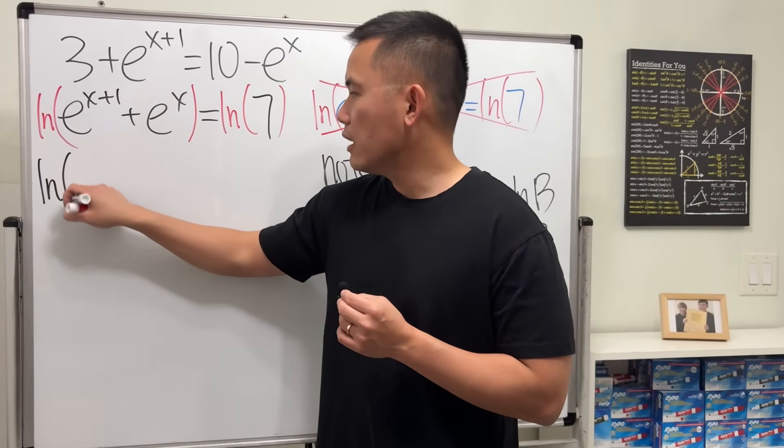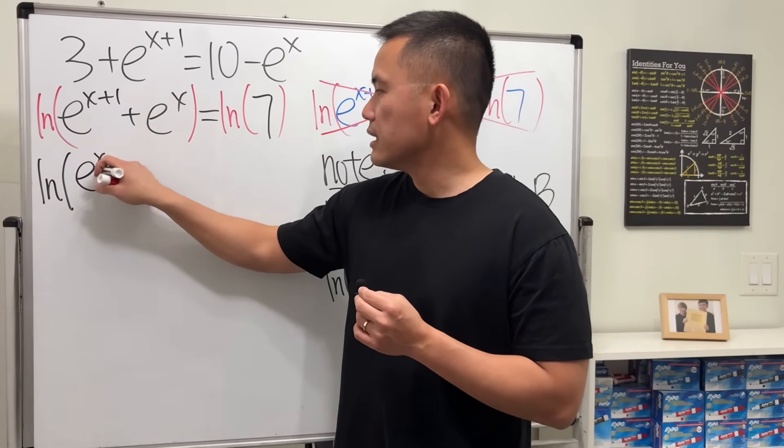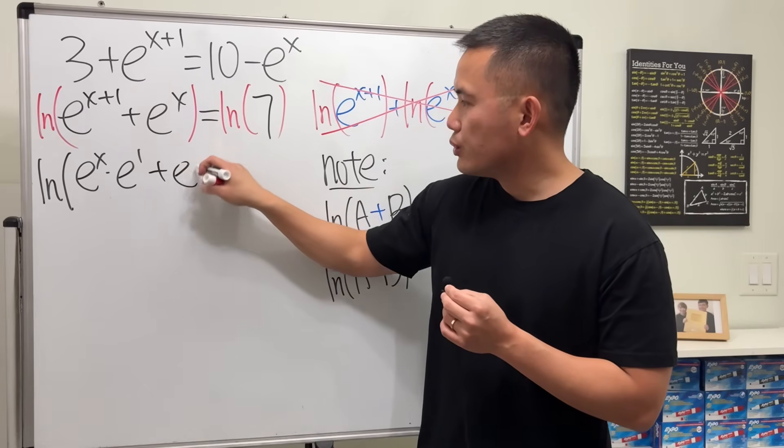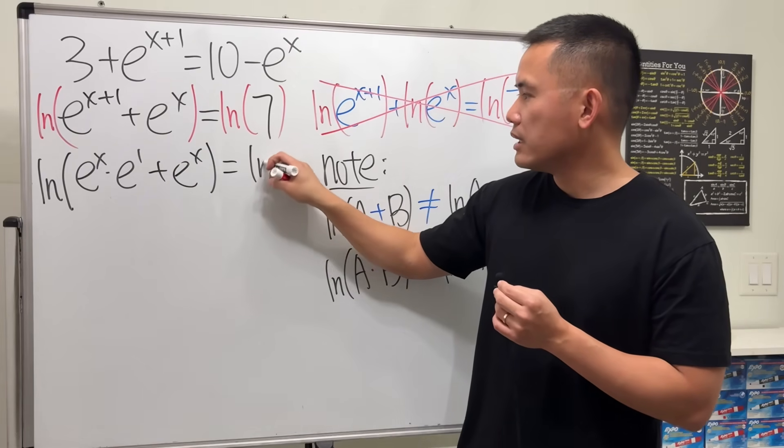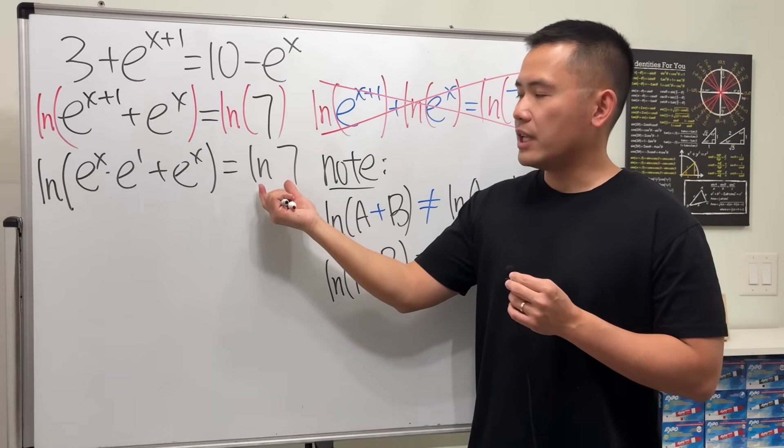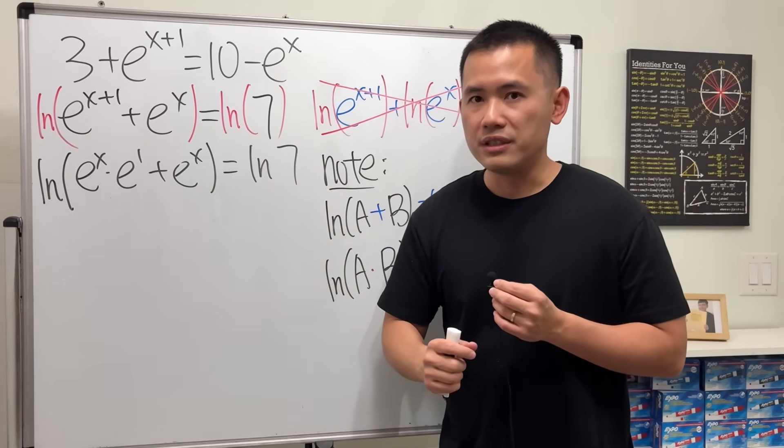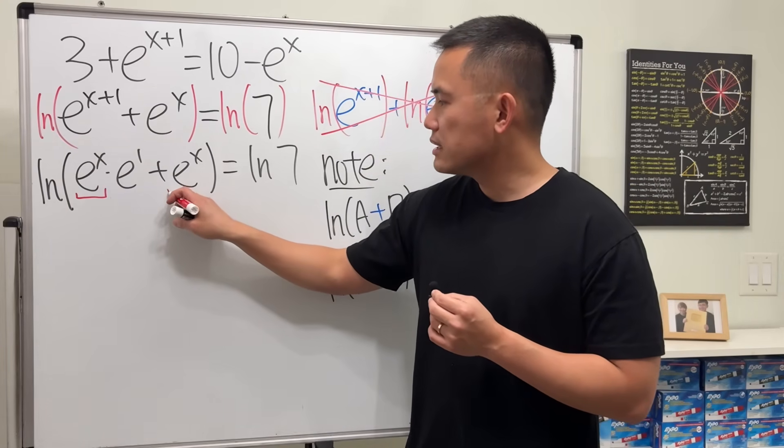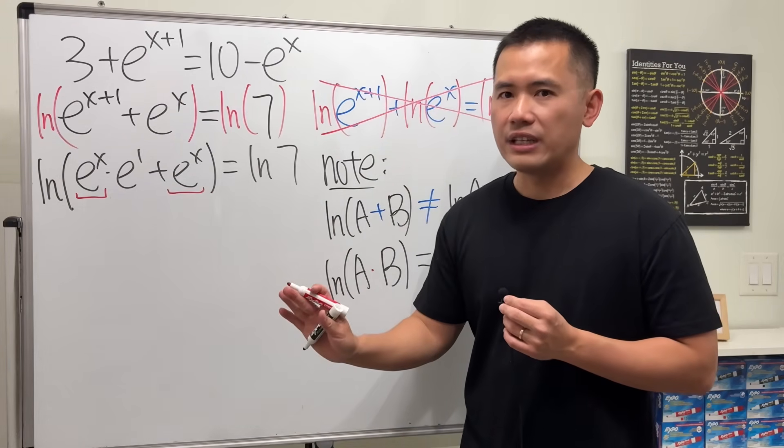Firstly, we have e^(x+1). We can break it apart by using the rule of exponents, so this is ln(e^x × e^1) + e^x = ln(7). When we have one thing inside the ln, you don't really need to use the parentheses.